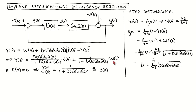To look at the effect of only the disturbance on the output, we set the reference input to zero, which allows us to write the transfer function from the disturbance input to the measured output as 1 divided by 1 plus the loop transfer function. This transfer function is usually called the sensitivity function and is denoted by S. We usually want to minimize the effect of the disturbance on the output, which means we want the gain of the sensitivity function to be small, especially for the range of frequencies expected in the disturbance signal.